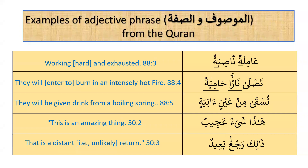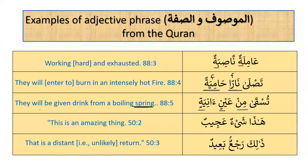One might wonder: nar has no ta' marbuta, so how is it feminine? We discussed that the word 'nar' is inherently feminine in Arabic. Then: 'Tusqa min 'aynin aniyatin' — they will be given drink from a boiling spring. 'Aynin' is majrur and 'aniyatin' is also majrur — because of the harf jar 'min.' Subhanallah, three verses give three grammatical cases: amilatun nasibatun (marfu'), naran hamiyatan (mansub), and 'aynin aniyatin (majrur). Note: 'ayn means both eye and spring, and both are feminine in Arabic.